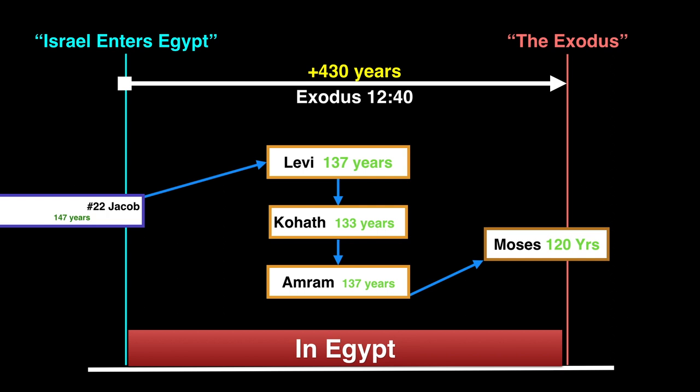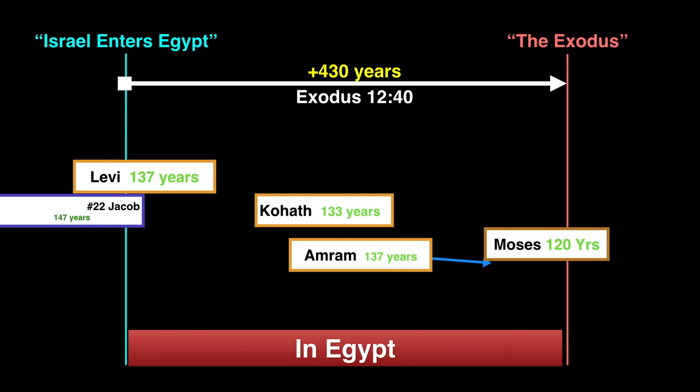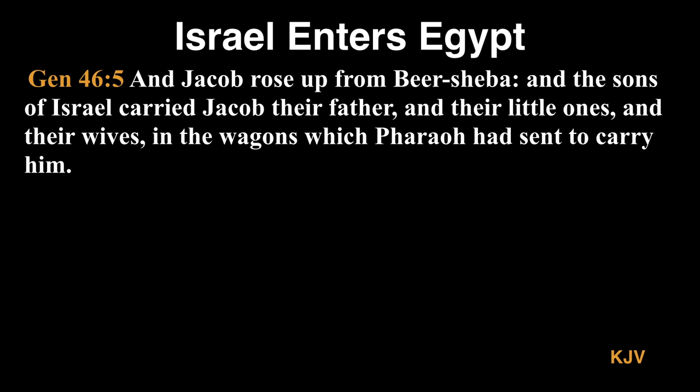And since Levi is older than Joseph, we need to move him back before Joseph, just by a few years. So, the only way for Moses to realistically be born is if you have Kohath and Amram both being born on the year of their father's death just to allow a couple of years left for Moses to be born. But why this really fails is because in Genesis 46, it says, And Jacob rose up from Beersheba, and the sons of Israel carried Jacob their father, and their little ones, and their wives, in the wagons which Pharaoh had sent to carry him.